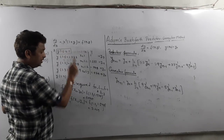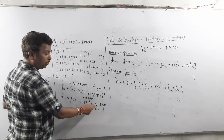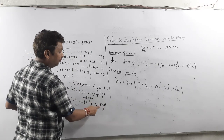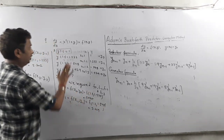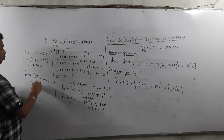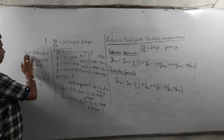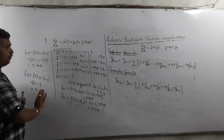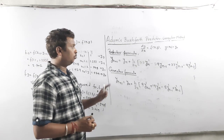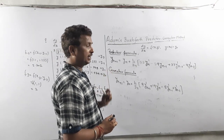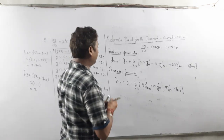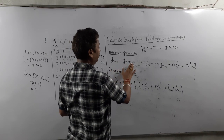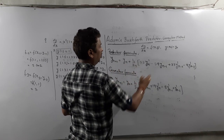For f(−1), put x = 1.2 and y = 1.548 into x²(1+y). Similarly, calculate f(−2) and f(−3). Once we have all values, we proceed to the predictor formula.